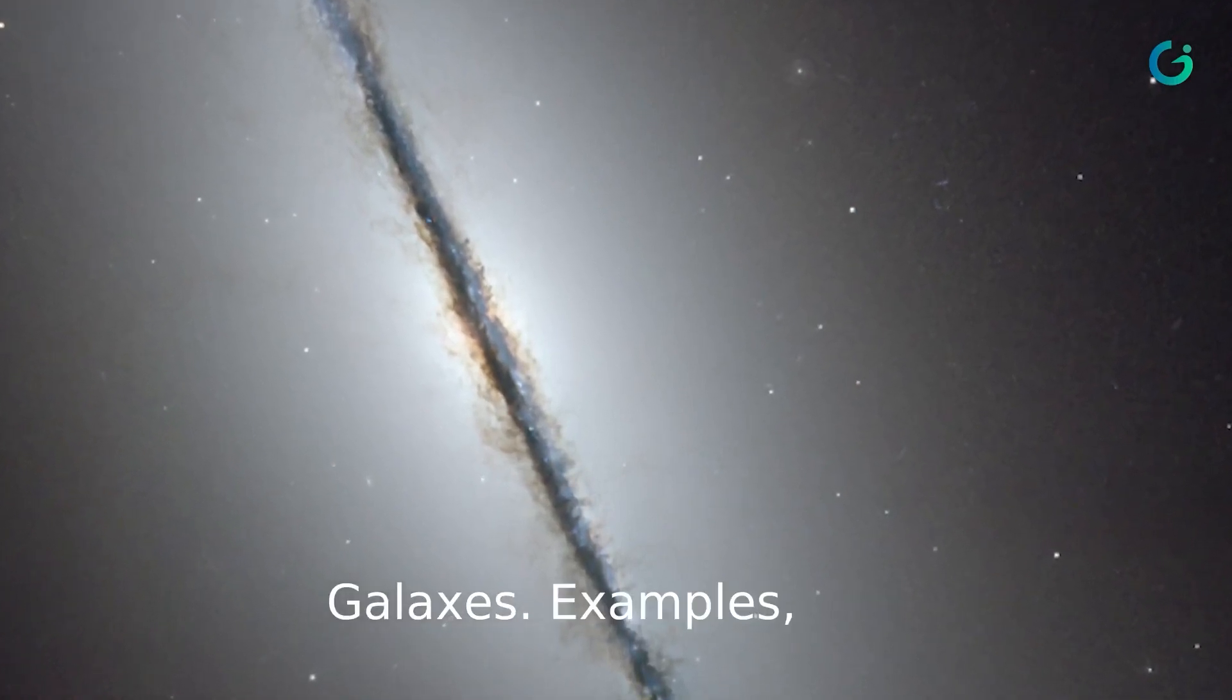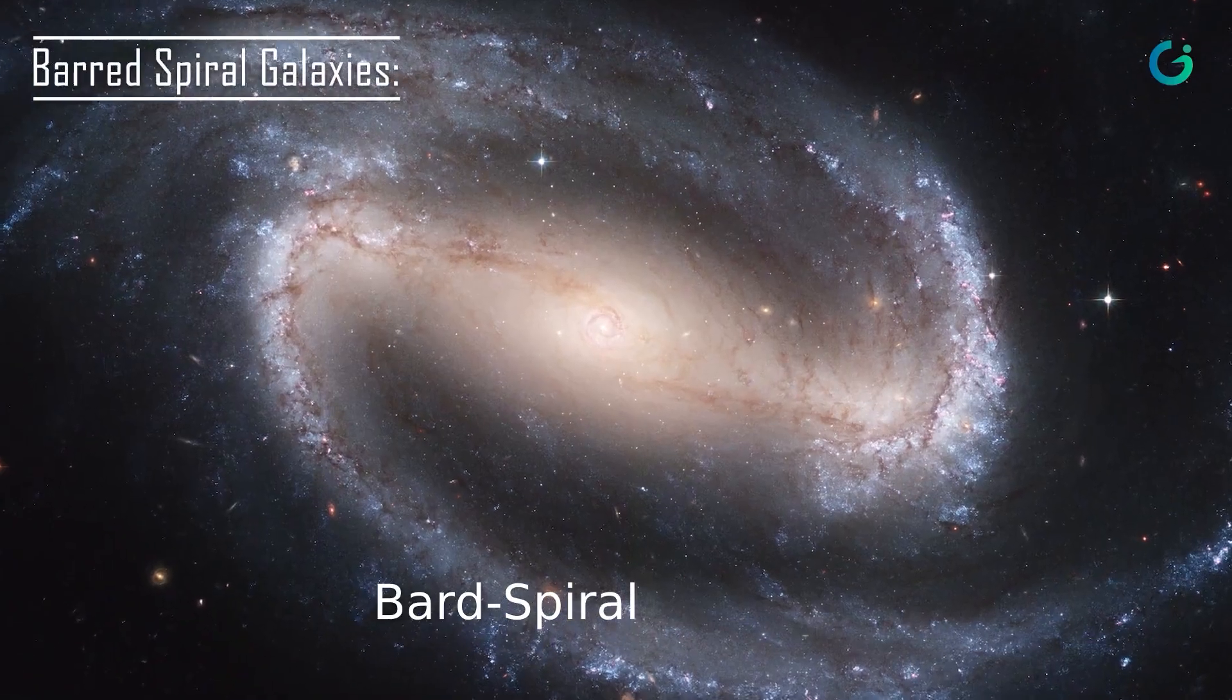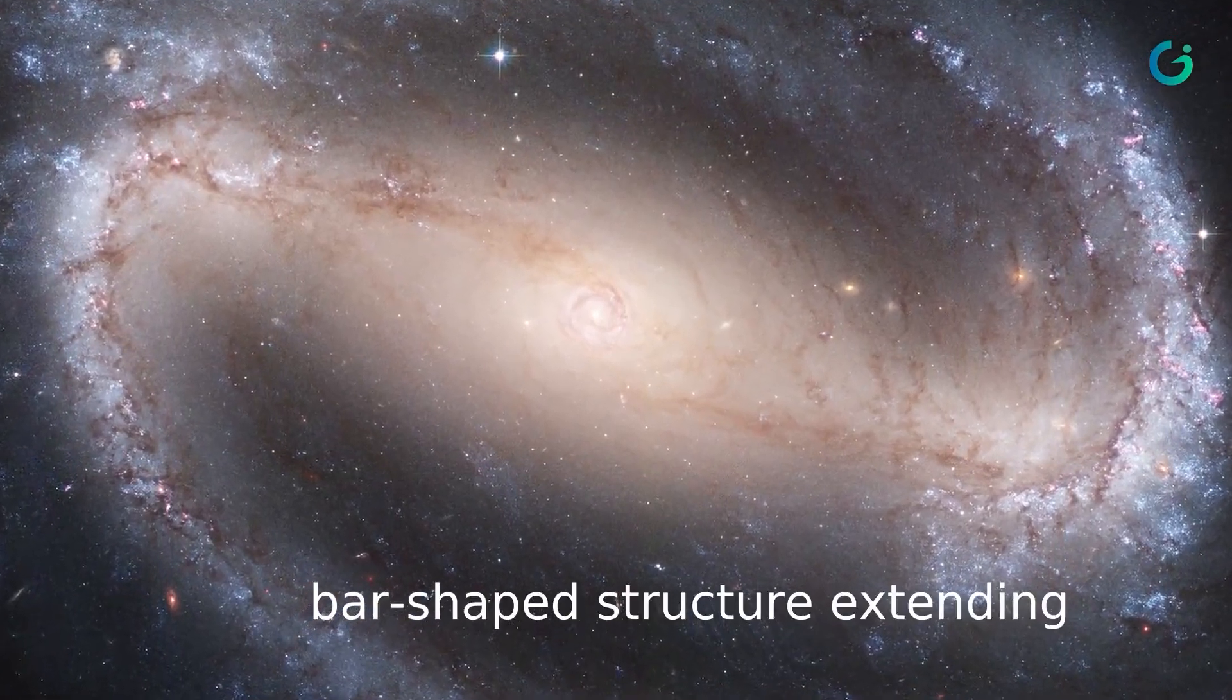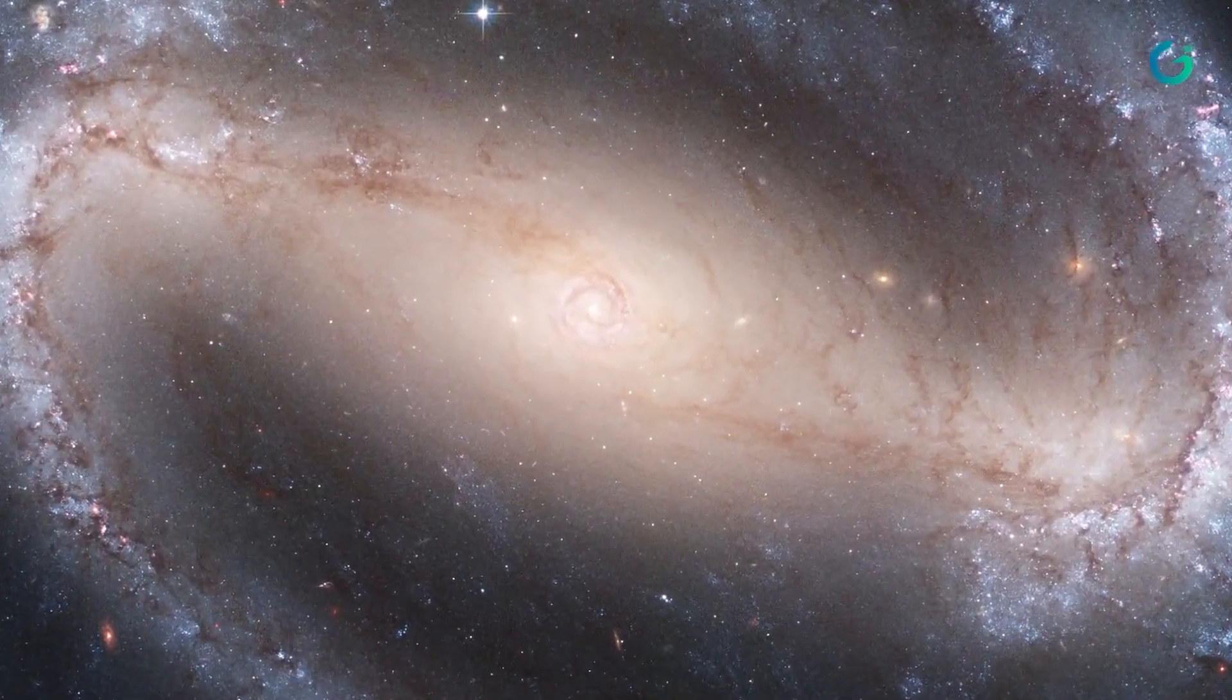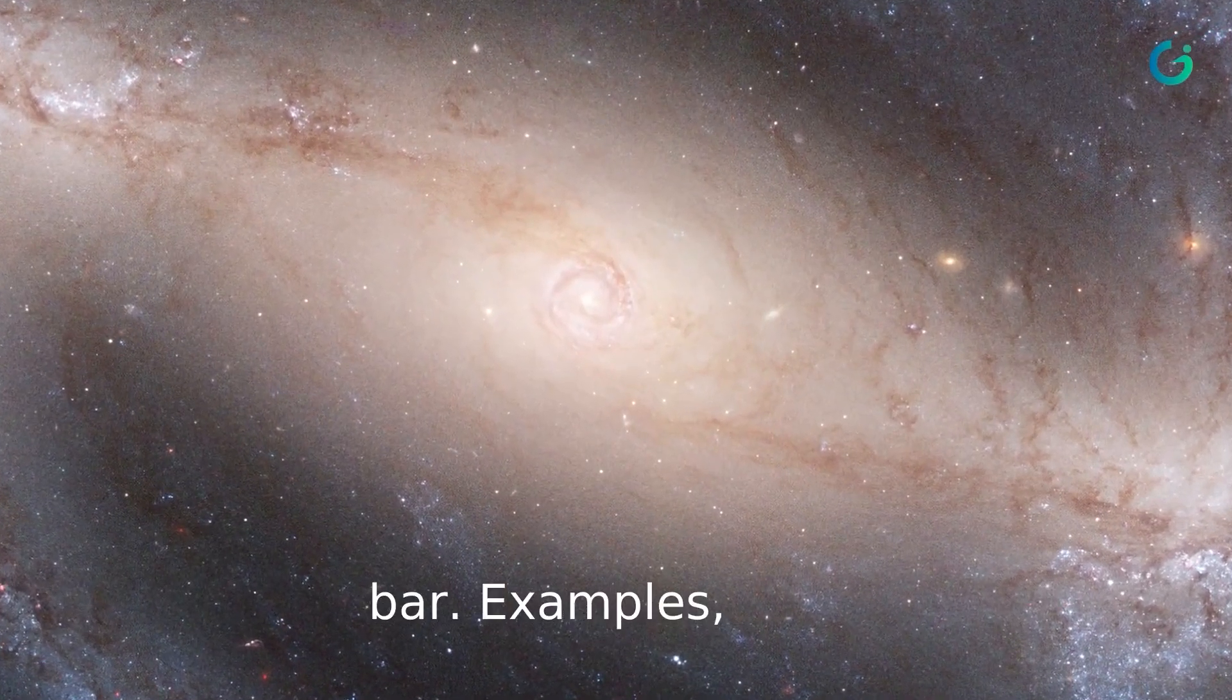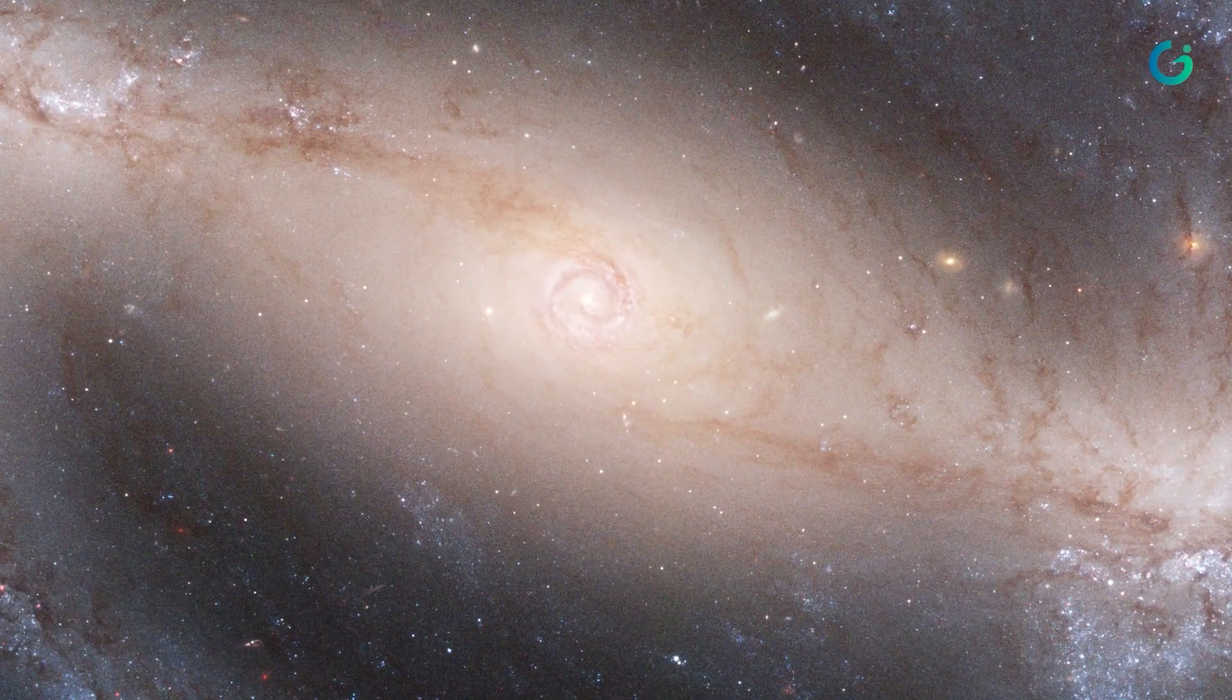Barred spiral galaxies have a central bar-shaped structure extending through the nucleus with spiral arms branching from the ends of the bar. Examples include NGC 1300 and M95.